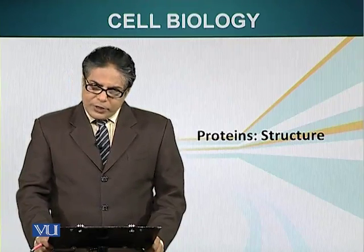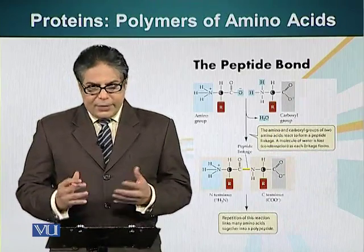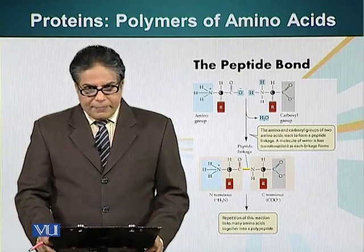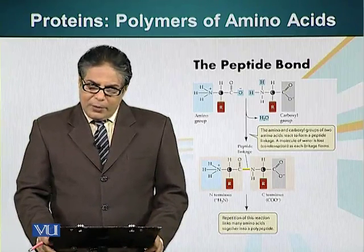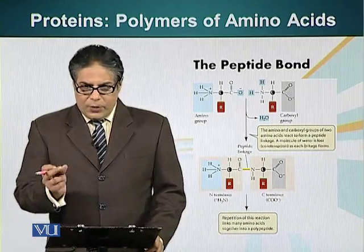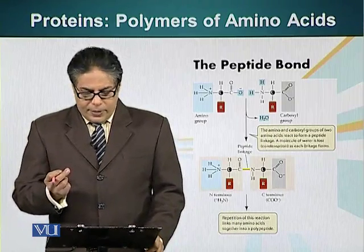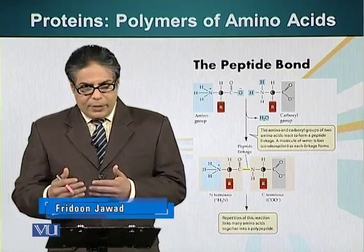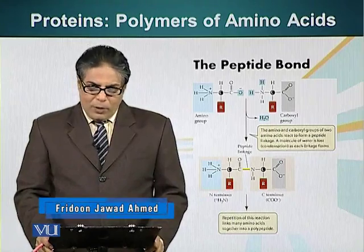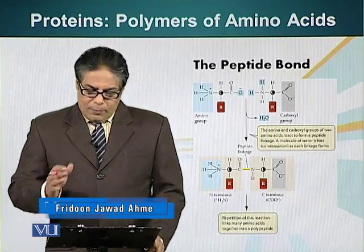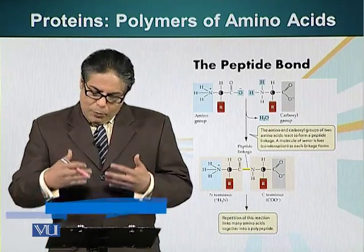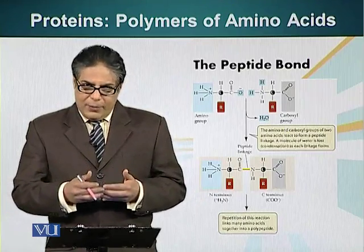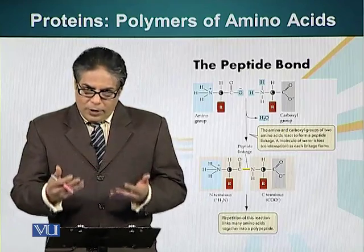The primary structure of protein is basically the sequence in which amino acids are linked together. We have already mentioned that amino acids are the basic unit of proteins — they are the monomers. These monomers are linked together through a peptide bond, which forms when a water molecule is removed from two adjacent amino acids — a condensation reaction.